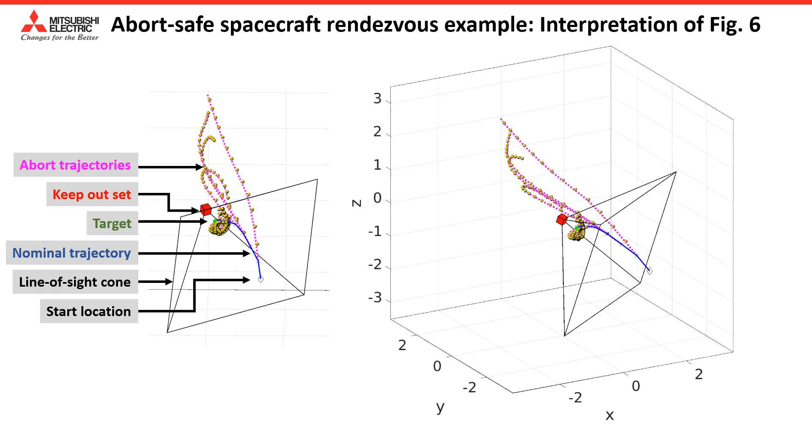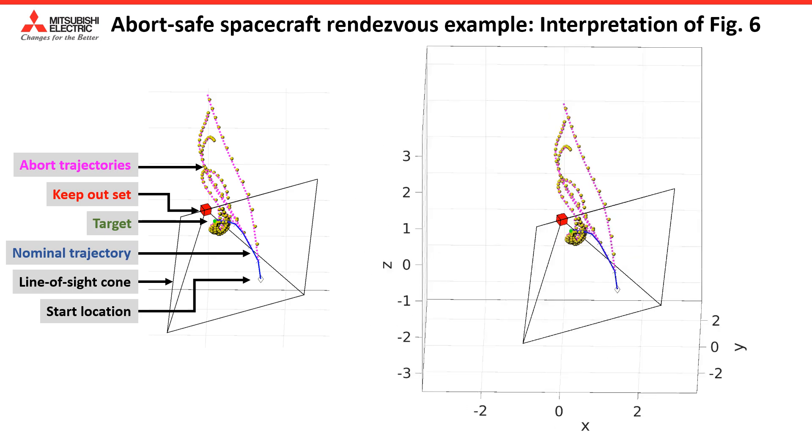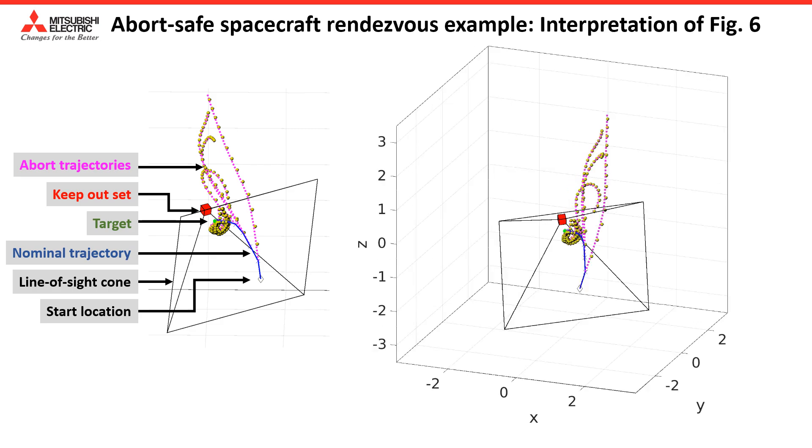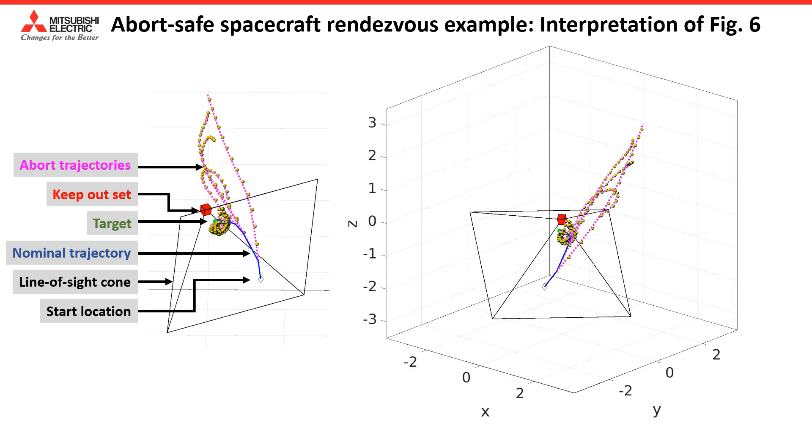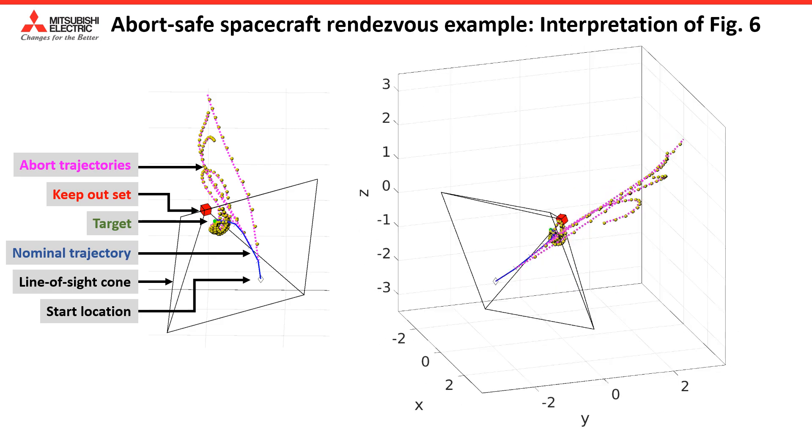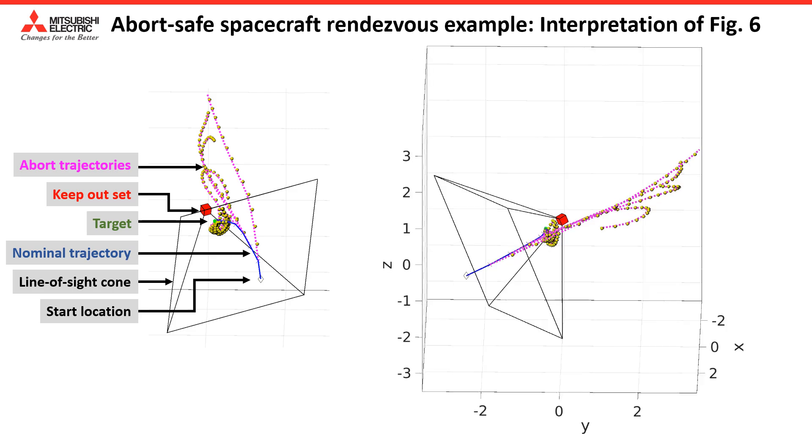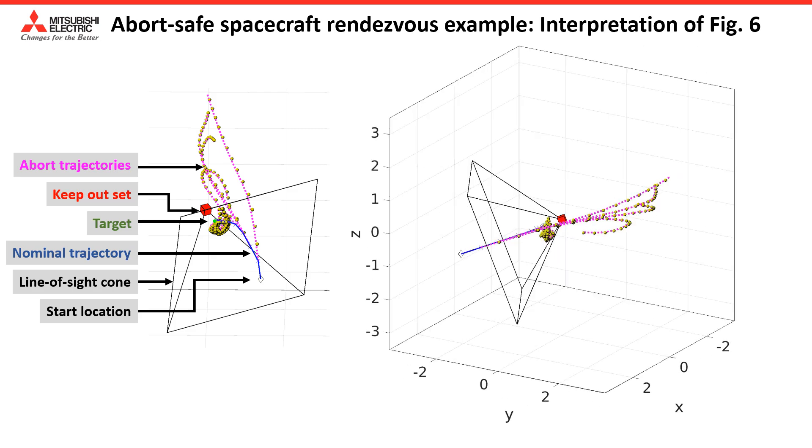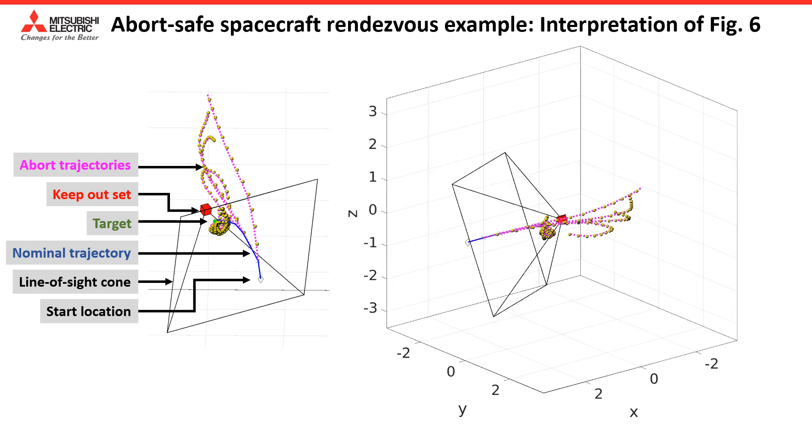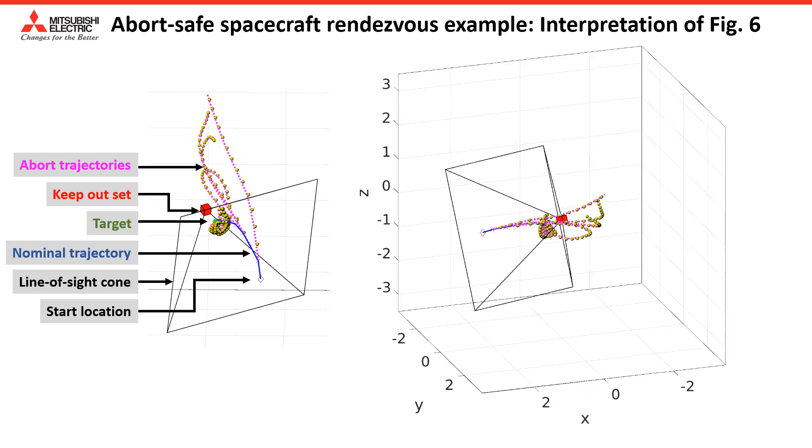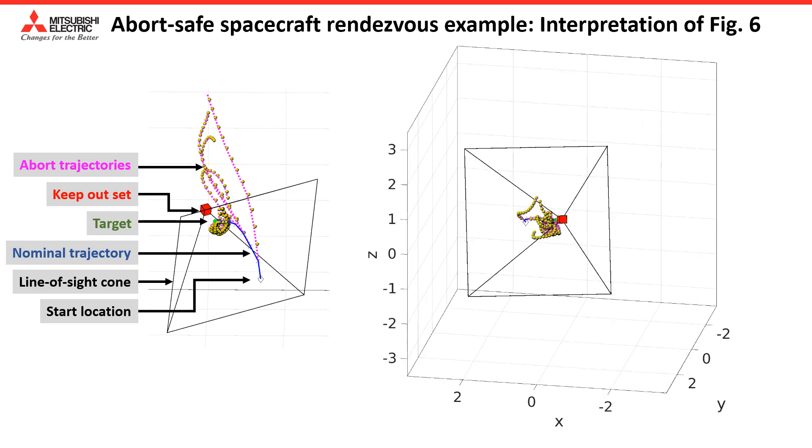We encoded this requirement using robust controllable sets and designed a nominal trajectory that at any point in time, on the event of a failure, can divert safely away from the keep-out set. If no failure occurs, the nominal trajectory proceeds towards the target.